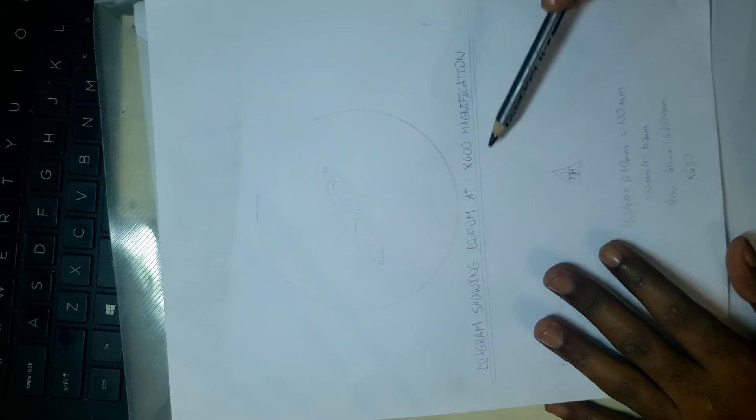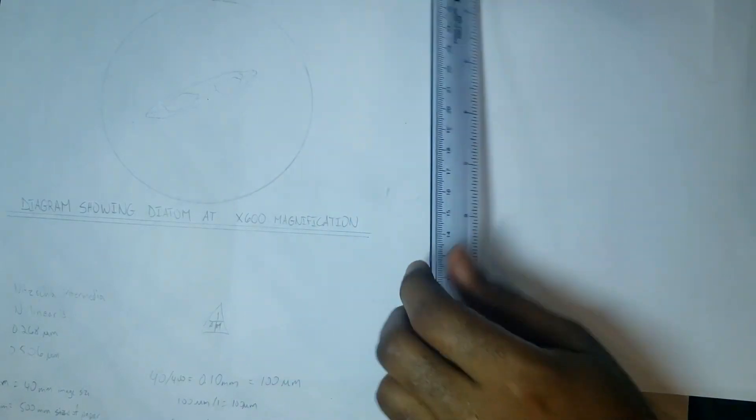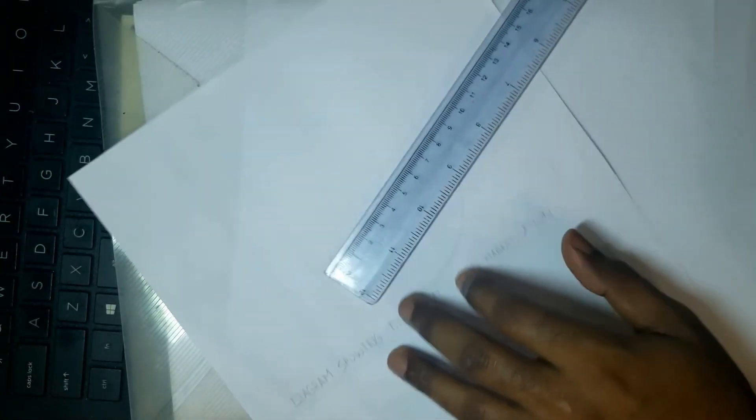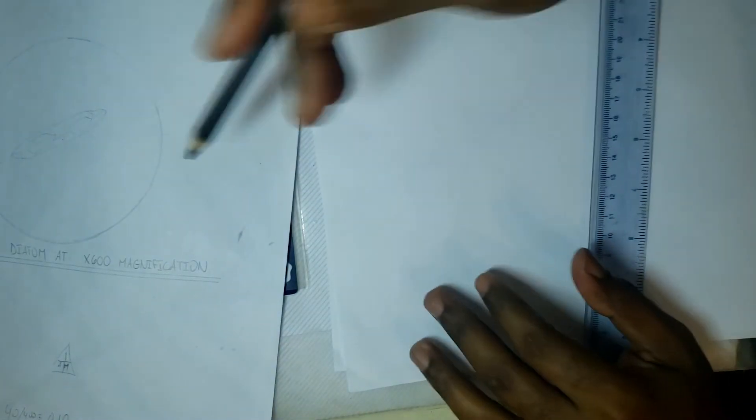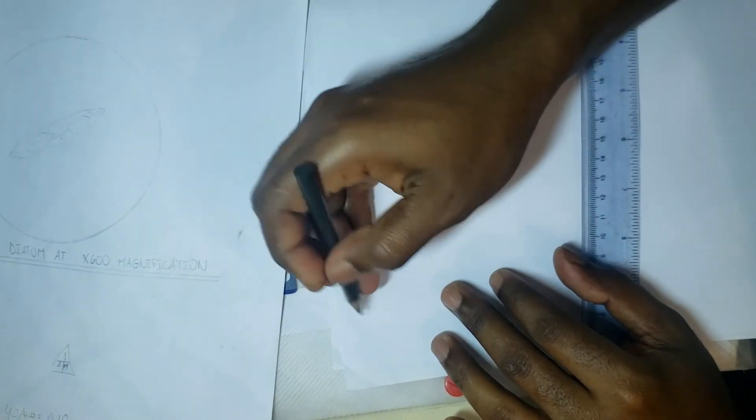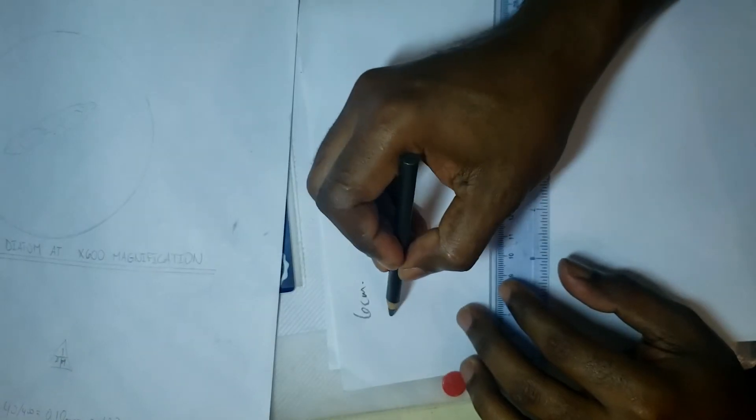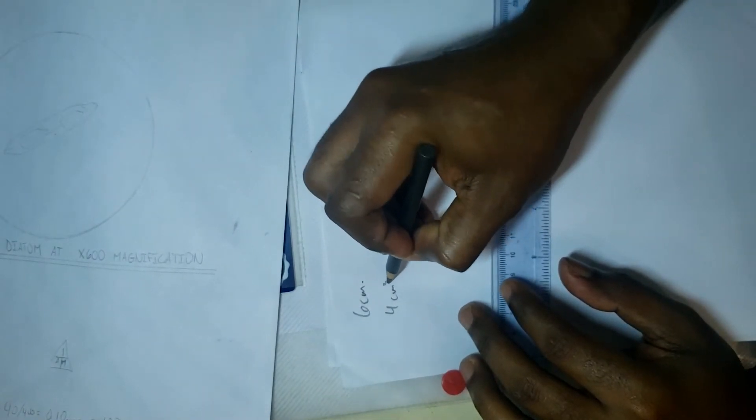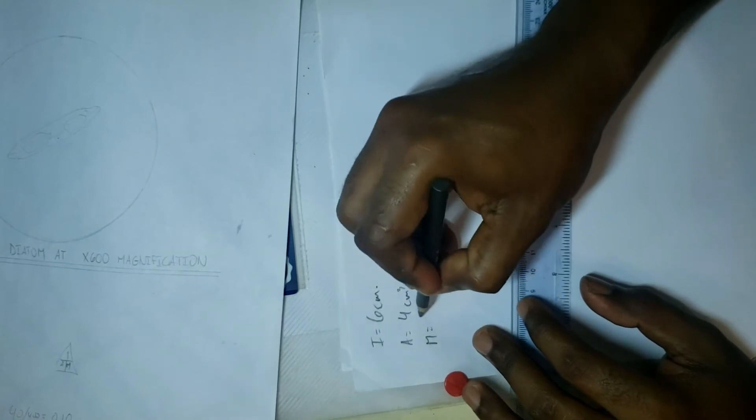We have the image here that I've drawn. Again, the image diagram showing the diatom at times 600 magnification. Now I'll just show you how I went about calculating that times 600 magnification. One of the first things we want to do is measure the actual image. In this case, the diagram is six centimeters, and the actual specimen that we're drawing on the computer was measured at four centimeters. That is your image, that is your actual.